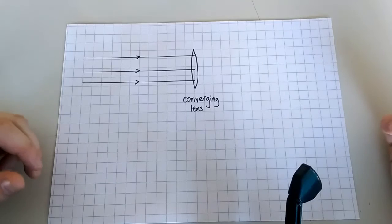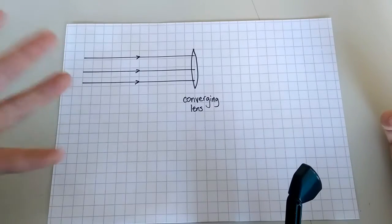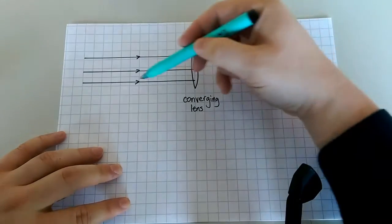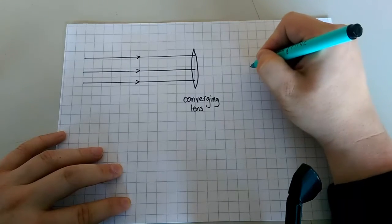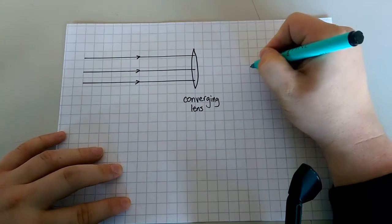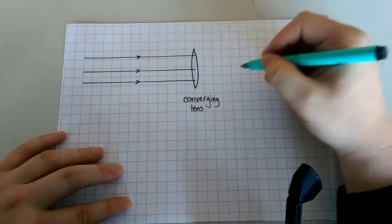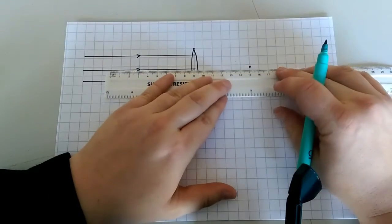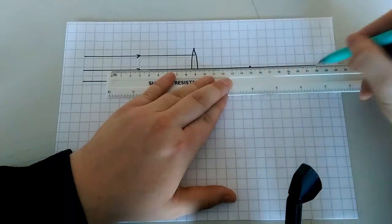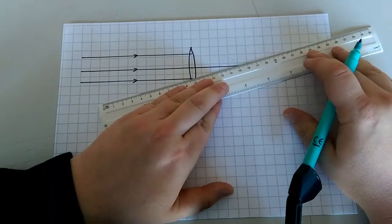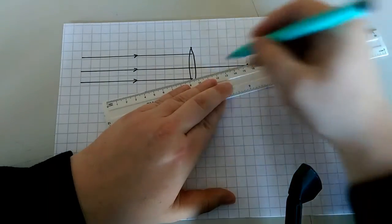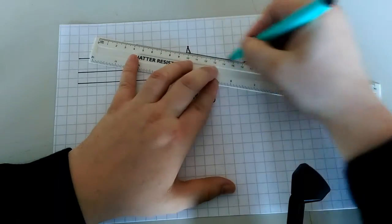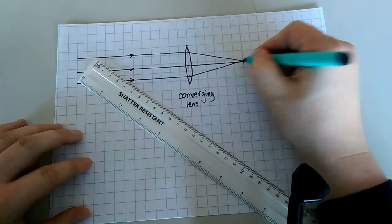One of your first questions might be: what is the focal length and what is the focal point exactly? Well, when you have a lens and rays of light enter that lens, the focal length is the distance from the lens to the point — the focal point — where all these rays of light come together. The rays of light that go through the middle just continue straight on, but the other rays will bend in and pass through the focal point.